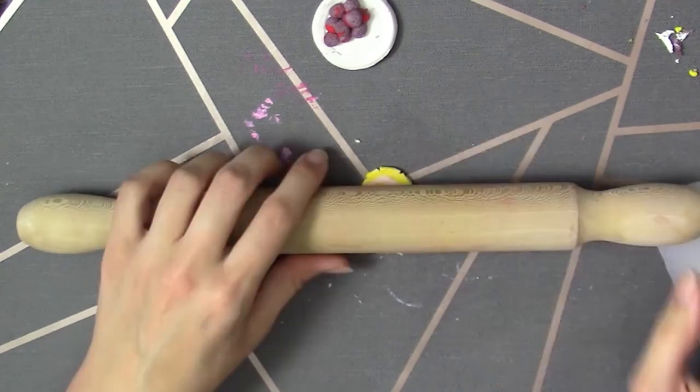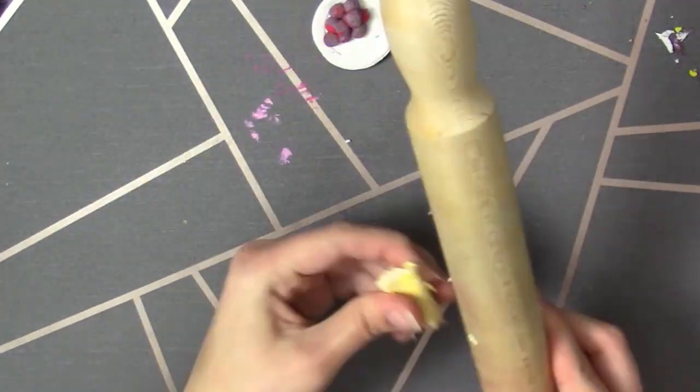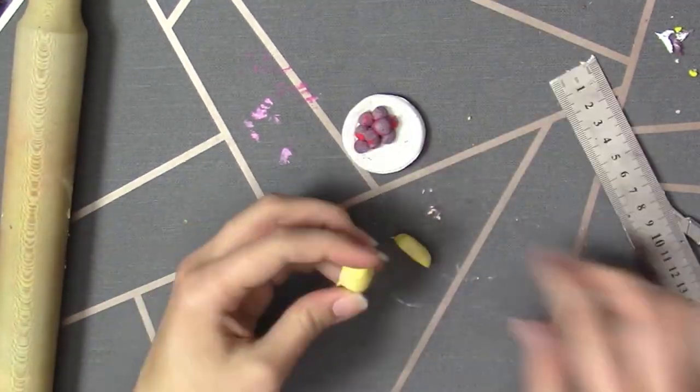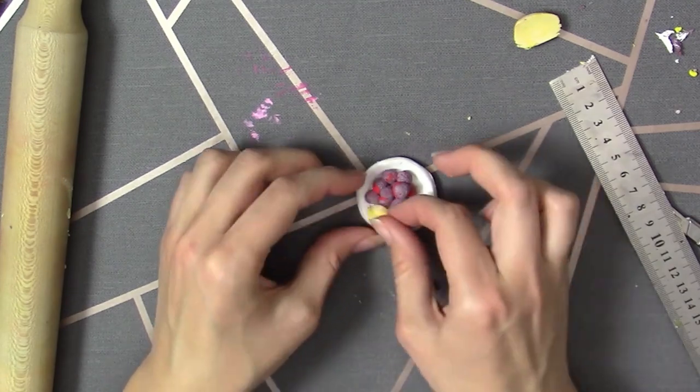Next I moved onto the mashed potato. I mixed some white and some yellow to get the mashed potato color. It was around half and half I think. I had to work this together a bit, as sometimes polymer clay can be quite tough.